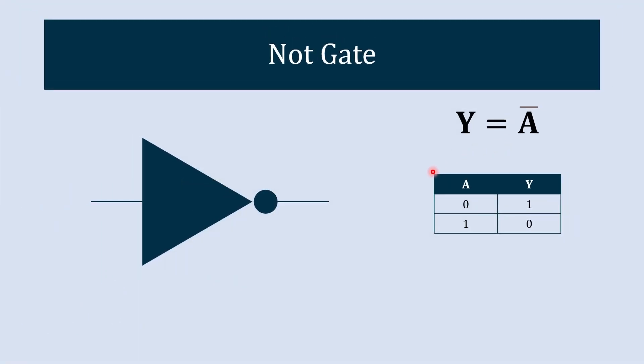From that understanding, the truth table is clear. As per this truth table, the output Y is nothing but A-bar. So Y = Ā.